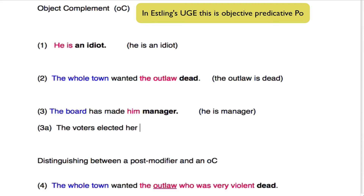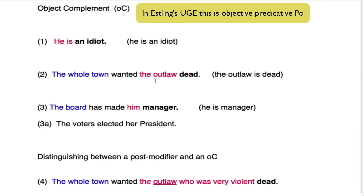Let's look at one more example whilst we are looking at this. If we say 3a: the voters elected her president. As you can see, you have the voters — these were the doers, the subject. Elected is the predicator. Her is the object. And because of their election, because of their voting, they changed her from being an ordinary citizen to being the president. And in this case, the president is the object compliment.